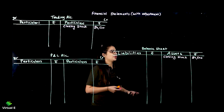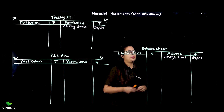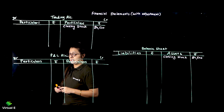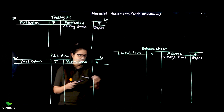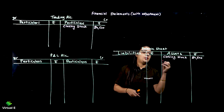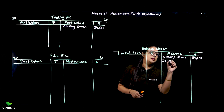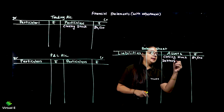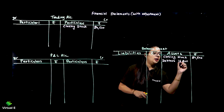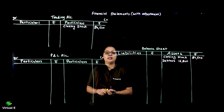Now bad debts adjustment - this is slightly difficult. For this, first we write debtors. Debtors we have are 16,200. We will follow the concept for that. First we do bad debts - bad debts of 200 rupees, so remaining debtors become 16,000.